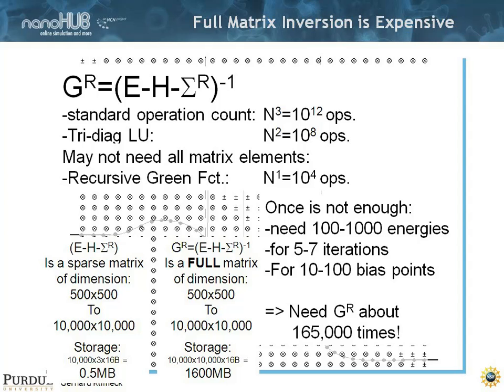You need to do that 100 times to 1000 times because we have all these energy resolved properties. And you do this for 5 to 7 iterations because you do a Hartree self-consistent calculation, and it doesn't converge in one step.